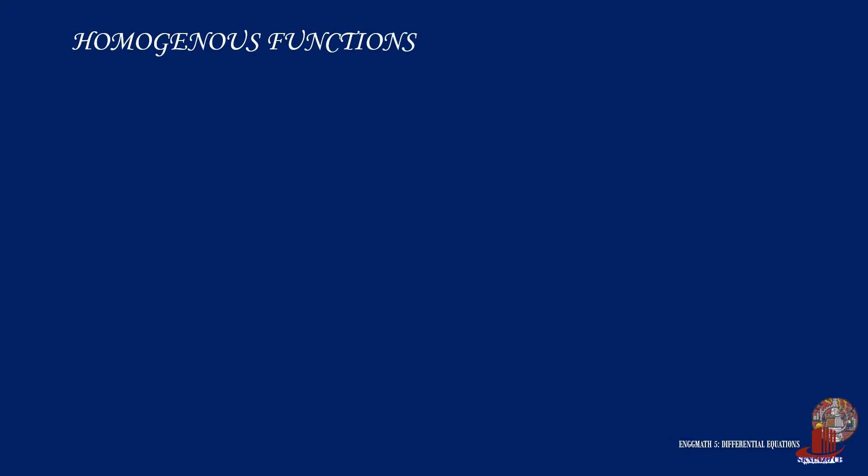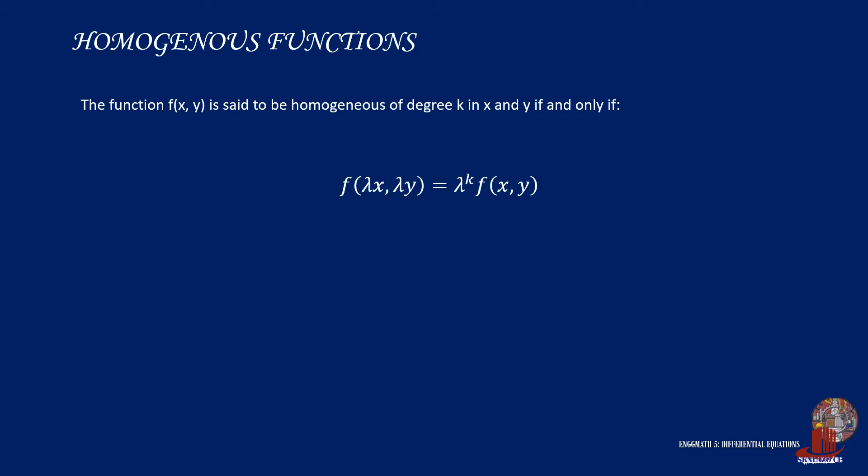The degree of each term is involved when checking the homogeneity of a function. Mathematically, the way to check this is by multiplying a constant lambda into the variables, such that the resulting function f(λx, λy) = λ^k · f(x, y). Sometimes, by tracking the function visually, we can identify if it is homogeneous or not.